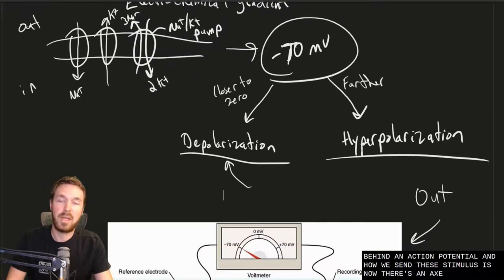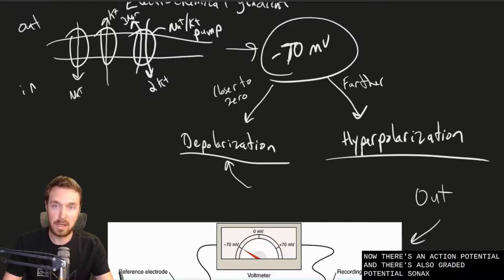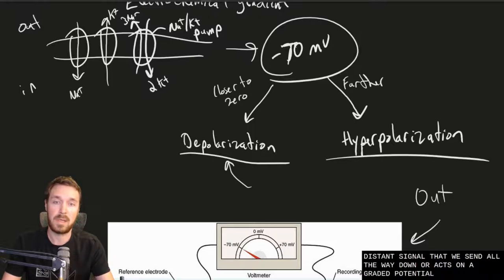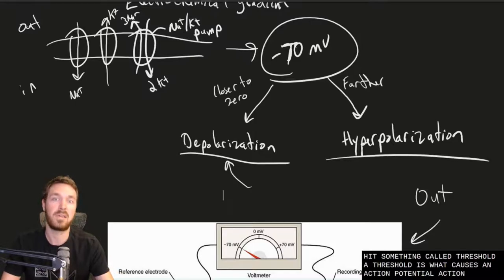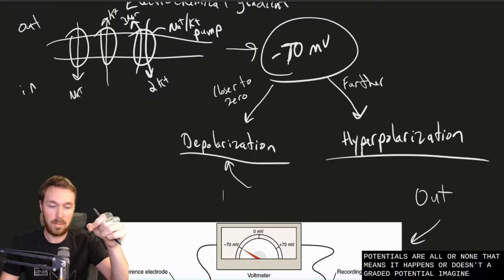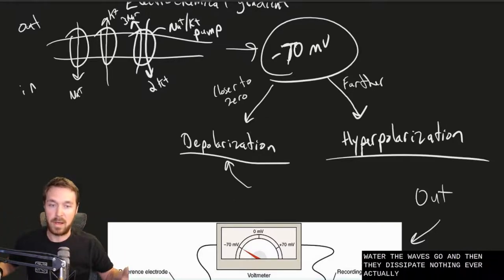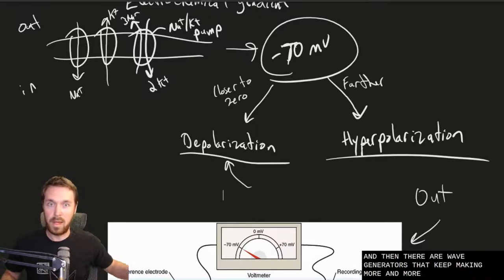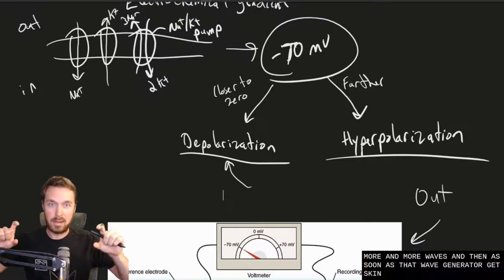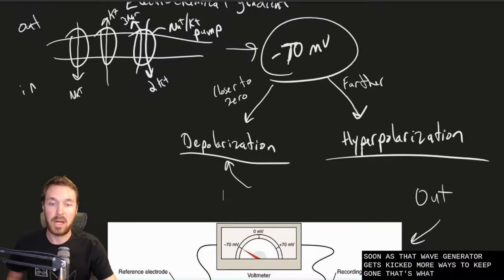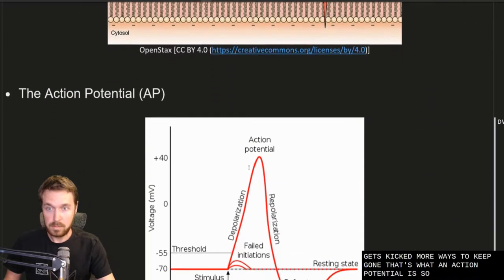There is an action potential and there is also a graded potential. An action potential is a long-distance signal sent all the way down our axons. A graded potential takes place when we don't hit something called threshold. A threshold is what causes an action potential. Action potentials are all or none — they happen or they don't. A graded potential is like dropping a small stone in water: the waves go and then dissipate. An action potential is like dropping a large stone that kicks a wave generator, making more and more waves that keep going.